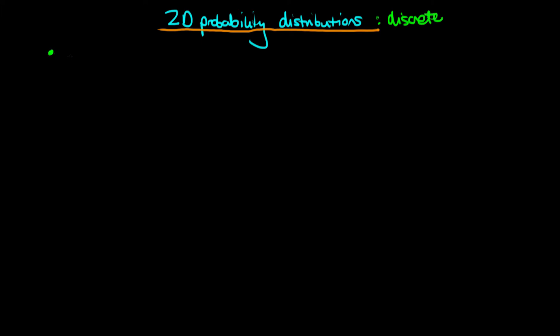So a two-dimensional probability distribution is a mathematical object which is used to describe the uncertainty associated with the outcome of two different processes.